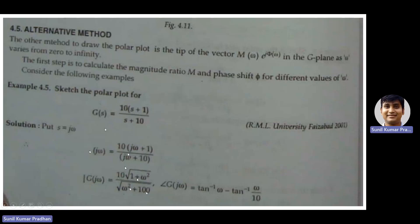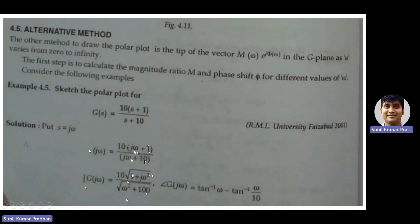The magnitude of G(jω) is 10 times the square root of (1 + ω²) divided by the square root of (ω² + 100). For a complex number, the magnitude is the square root of (real part squared plus imaginary part squared). In the numerator, the real part is 1 and imaginary part is ω. In the denominator, the real part is 10 and imaginary part is ω. Similarly, for the phase: tan⁻¹(ω) minus tan⁻¹(ω/10). The denominator contributes a negative phase because (10 + jω) is in the denominator. So the phase of G(jω) equals tan⁻¹(ω) minus tan⁻¹(ω/10).